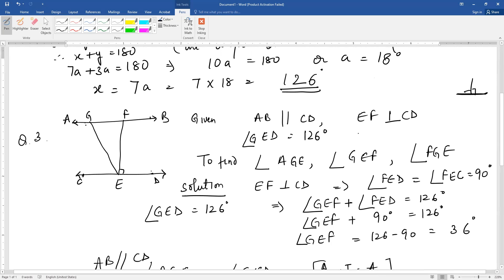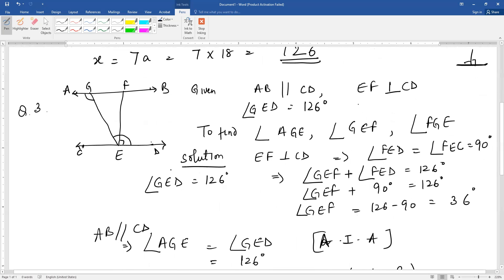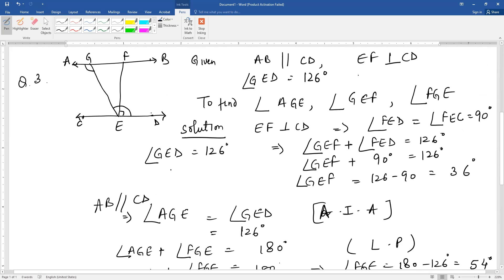Also, angle AGE and angle GED are alternate interior angles because AB is parallel to CD. Alternate interior angles are equal if the lines are parallel. So therefore angle AGE is equal to 126 degrees.